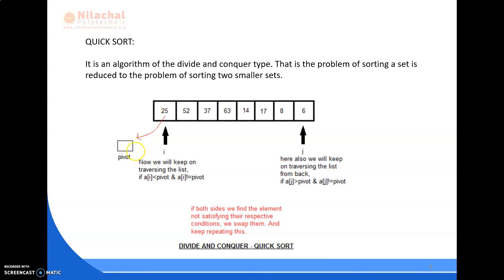The pivot element is sorted in such a manner that it will be placed at its correct location in the array. From the left side of the array there will be elements less than the pivot element, and from the right side of the array there will be elements greater than the pivot element. The pivot element, here 25, will find its position in the array according to the QuickSort algorithm.